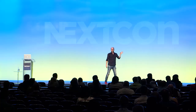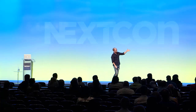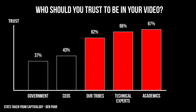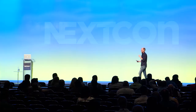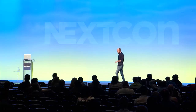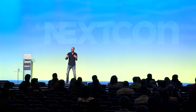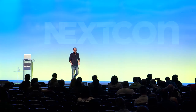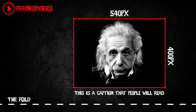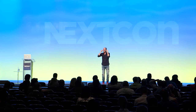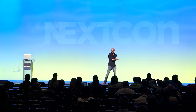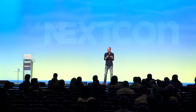Who should you put in a video to increase trust? Don't put your CEO in there, don't put government in there — look for someone tribal, something that looks like your target audience or an expert. Make it 540 by 400 pixels — that's the optimal size for increasing play rate. If it's small, you don't bother. If it's too big, it's overwhelming. Put a caption beneath it — if it's compelling, people might not have their headphones ready, but if you make it sound interesting, they may plug them in and play the video.